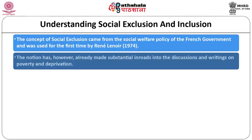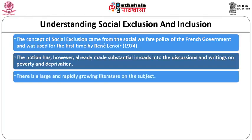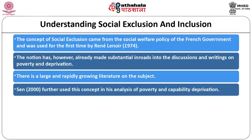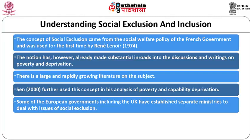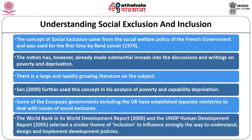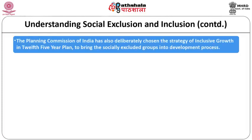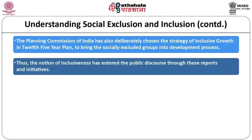The concept of social exclusion came from the social welfare policy of the French government and was used for the first time by Renee Lenoy. Amartya Sen further used this concept in his analysis of poverty and capability deprivation. Several European governments, including the UK, established separate ministries to deal with social exclusion. The World Bank's 2006 World Development Report and UNDP's 2005 report selected the theme of inclusion. India's Planning Commission chose the strategy of inclusive growth in the 12th Five-Year Plan.